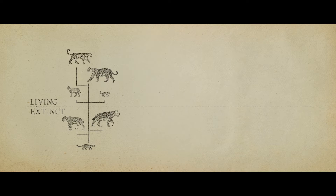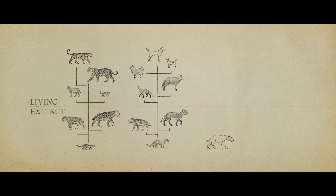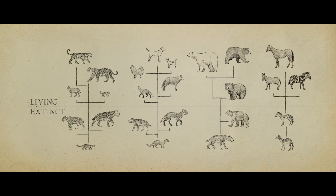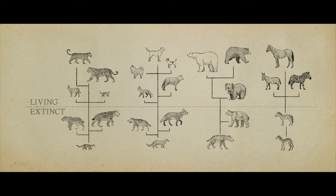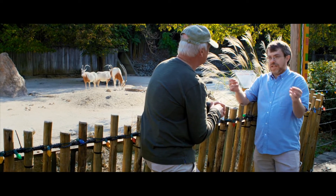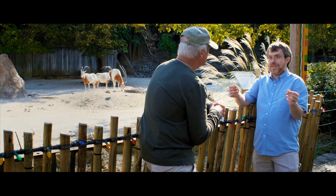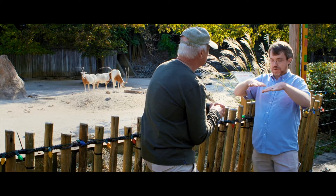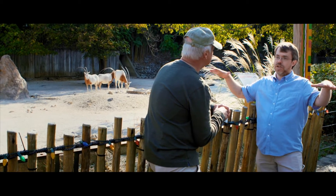There's a felid tree which has all the cats on it, there's the canid tree which has all the dogs on it, there's the ursid tree which has all the bears on it, there's the equid tree with all the horses on it, and so on and so forth. Each individual created kind has its own individual tree, so what you end up with is not one big tree of life — you end up with something like an orchard or a forest, where you have lots of different trees all growing together from the same created base.